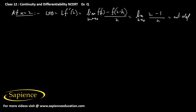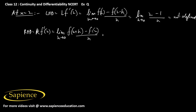Therefore the left hand derivative becomes the limit as h tends to 0 of (2 minus 1) divided by h, which is 1/h — also not defined. The right hand derivative r f'(2) equals the limit as h tends to 0 of f(2 plus h) minus f(2), divided by h, which is (2 minus 2)/h = 0/h — also not defined.